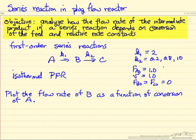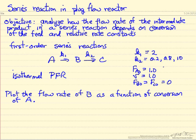In this video I want to present an analysis of how the flow rate of an intermediate product in a series reaction depends on the conversion of the feed and the relative rate constant. I'm looking at a first order series reaction: A goes to B, and B can subsequently react to C, indicated by the rate constant. We're interested in this intermediate product B.